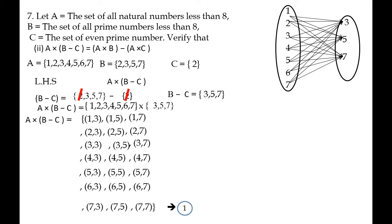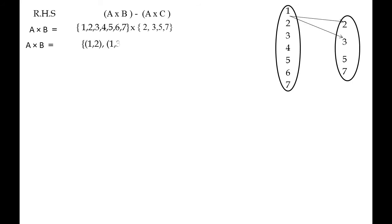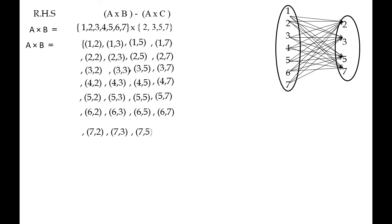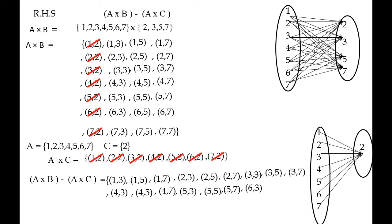Left-hand side completed. Next, right hand side: (A × B) - (A × C). First A × B using Cartesian product with arrow diagram. A × B gives ordered pairs: (1,2), (1,3), (1,5), (1,7), (2,2), (2,3), (2,5), (2,7), (3,2), (3,3), (3,5), (3,7), (4,2), (4,3), (4,5), (4,7), (5,2), (5,3), (5,5), (5,7), (6,2), (6,3), (6,5), (6,7), (7,2), (7,3), (7,5), (7,7).